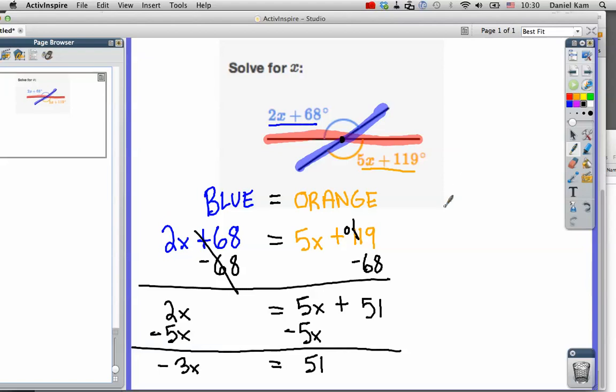So I'm going to rewrite it up here. Negative 3x equals 51. Divide by negative 3 on both sides. And x is going to equal, let's do it in the calculator, 51 divided by negative 3.